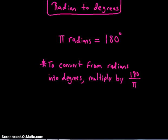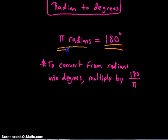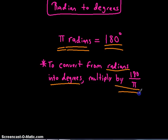This lesson is about converting from radians to degrees. If I gave you pi, pi is in radians, and that really means 180 degrees — pi radians means basically 180 degrees. To convert from radians to degrees, you simply multiply by 180 over pi. That's going to help you change radians into degrees.